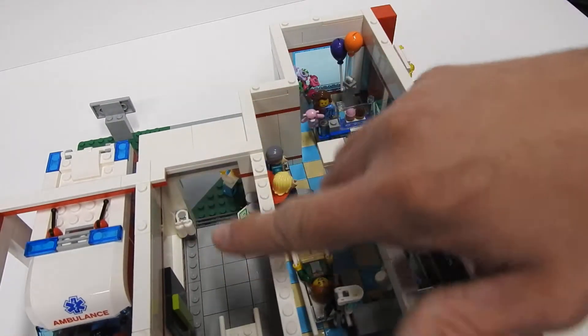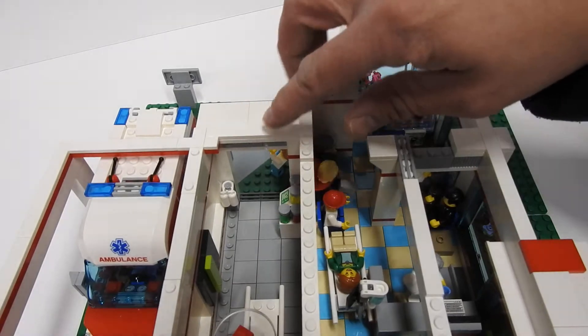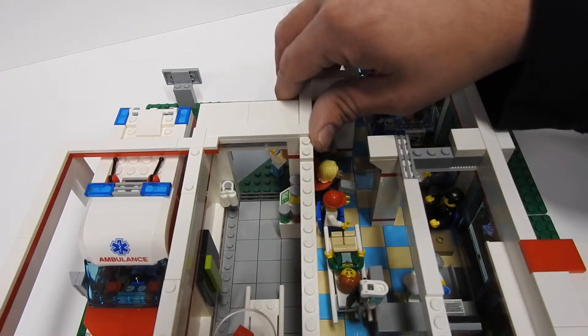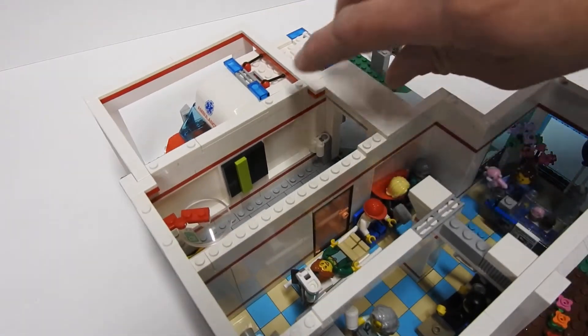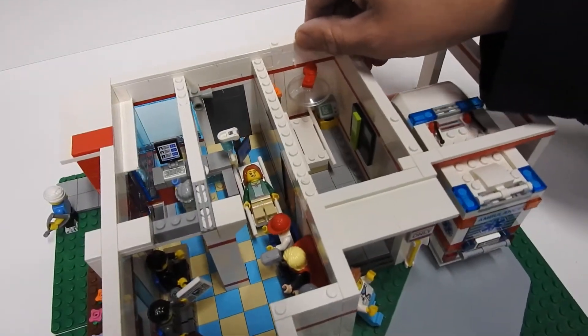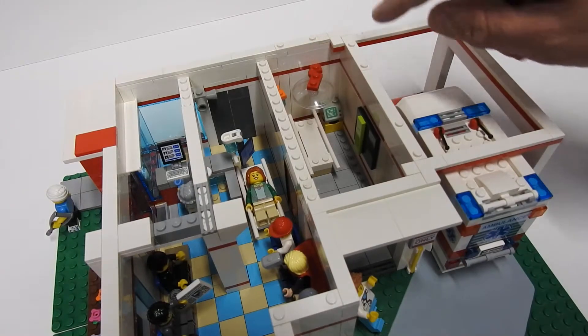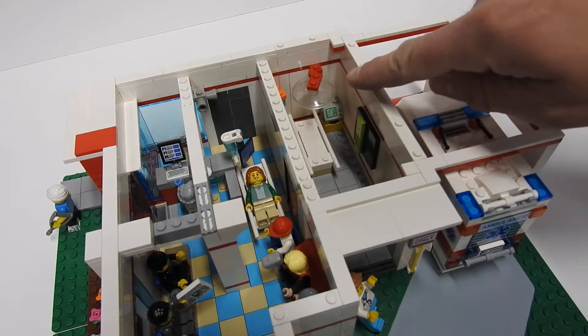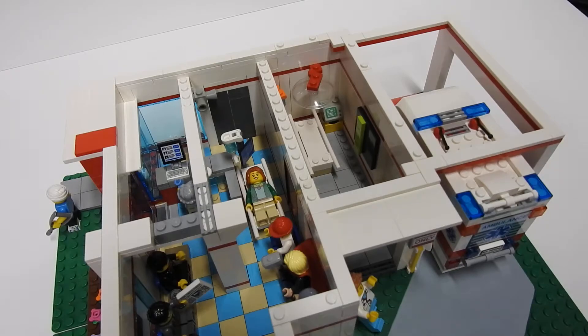And over here on this side is the emergency room. They drop off the patient, and then they've got some charts and stuff on the side. Got a little stretcher machine to do whatever they need to do for the emergency.